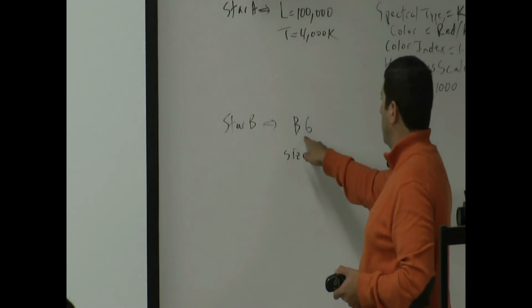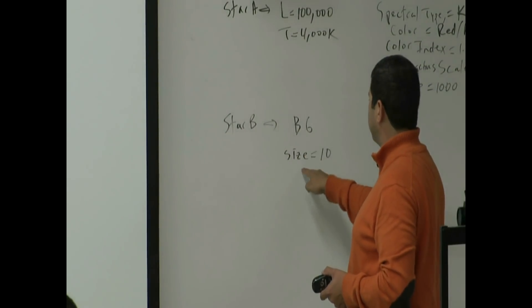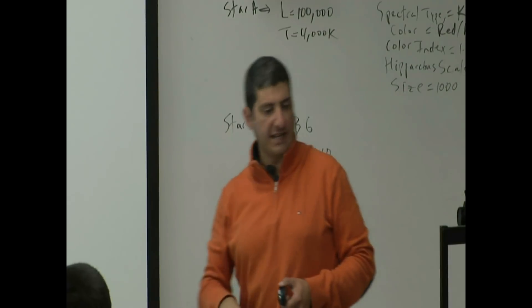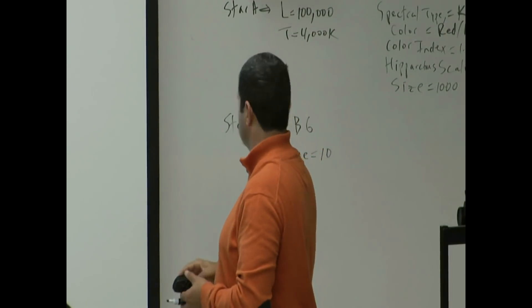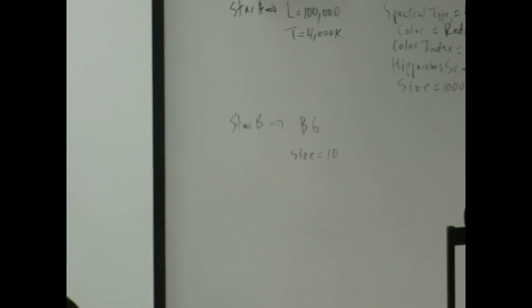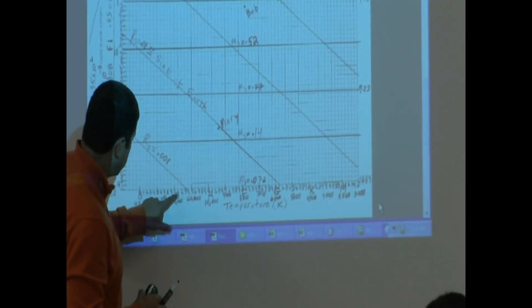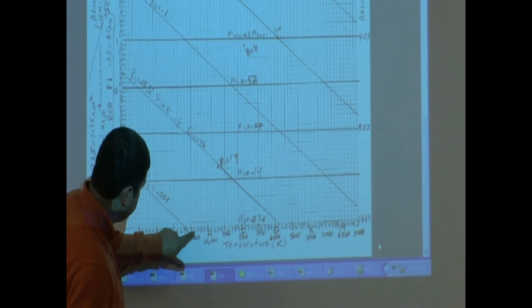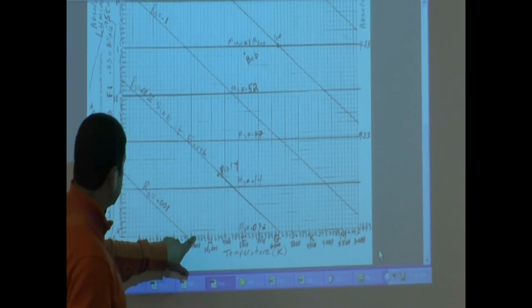Let's plot this one. A star is B6, the size is 10. Where would that go? B6. B0, B1, B2, B3, B4, B5, B6. Size is 10.